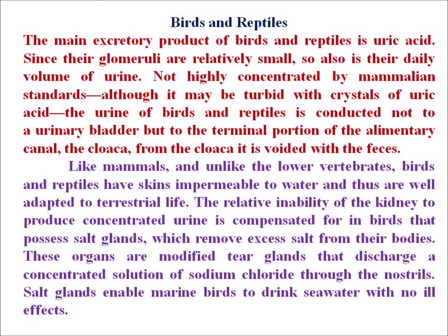The main excretory product of birds and reptiles is uric acid. Since their glomeruli are relatively small, so also is their daily volume of urine — not highly concentrated by mammalian standards. Although it may be turbid with crystals of uric acid, the urine of birds and reptiles is conducted not to a urinary bladder but to the terminal portion of the alimentary canal; from the cloaca it is voided with the feces. Like mammals and unlike the lower vertebrates, birds and reptiles have skins impermeable to water and thus are well adapted to terrestrial life. The relative inability of the kidney to produce concentrated urine is compensated in birds that possess salt glands, which remove excess salt from their body. These organs are modified tear glands that discharge a concentrated solution of sodium chloride through the nostrils, enabling marine birds to drink seawater with no ill effects.